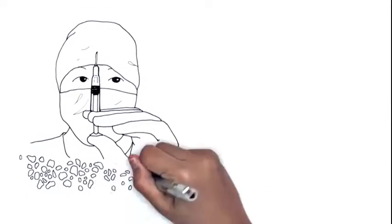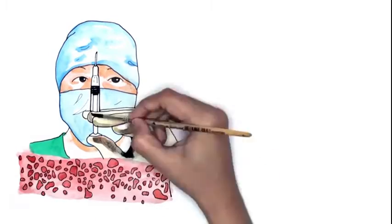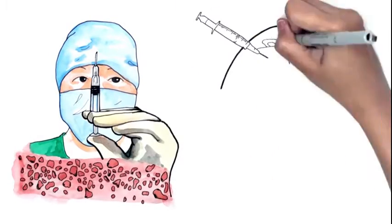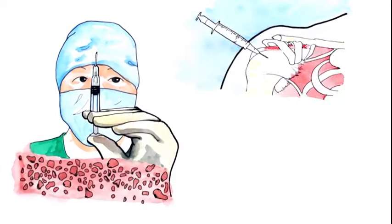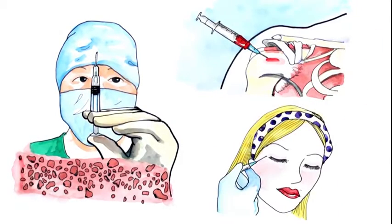PRP or platelet-rich plasma is a process where a person's own healing cells, the platelets, are employed to heal injuries in joints, cartilage, tendons, ligaments, and even for skin rejuvenation.